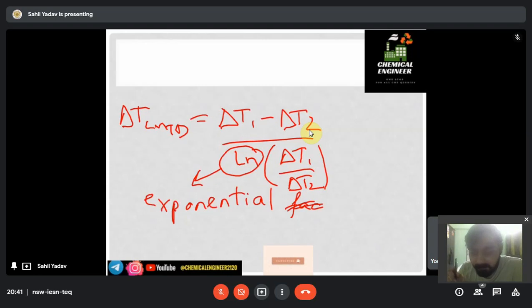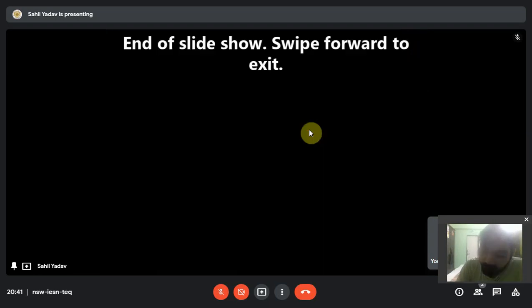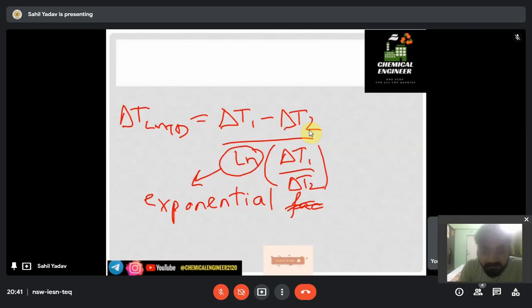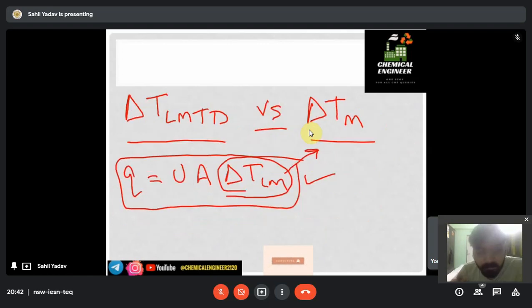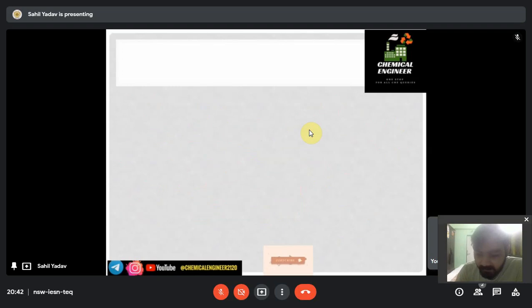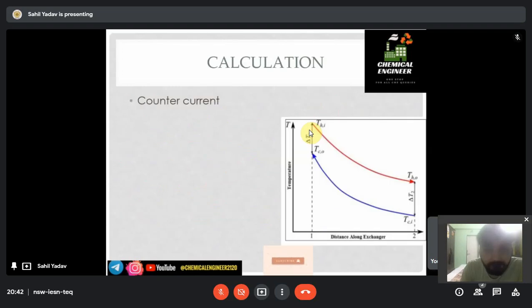The answer is: ΔT LMTD is generally showing the exponential profile of the heat transfer in heat exchanger or any equipment, while mean temperature arithmetic mean temperature profile shows the linear profile of the temperature transfer.